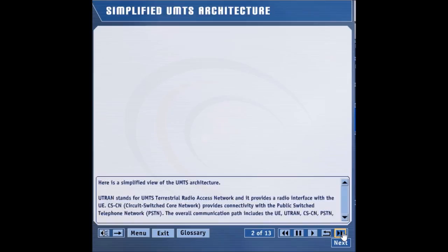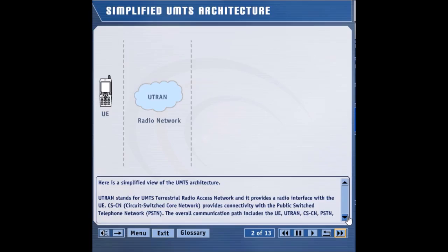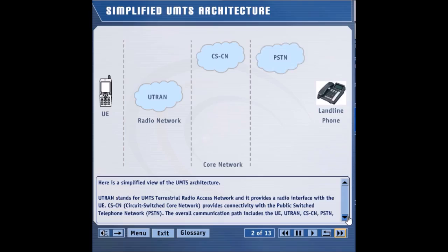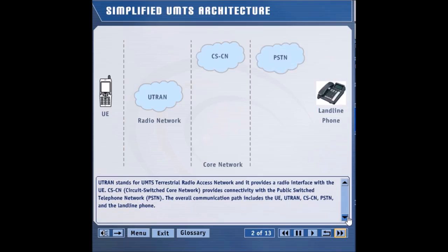Here is a simplified view of the UMTS architecture. UTRAN stands for UMTS Terrestrial Radio Access Network, and it provides a radio interface with the UE. CSCN, or Circuit Switch Core Network, provides connectivity with the Public Switch Telephone Network, or PSTN. The overall communication path includes the UE, UTRAN, CSCN, PSTN, and the landline phone.